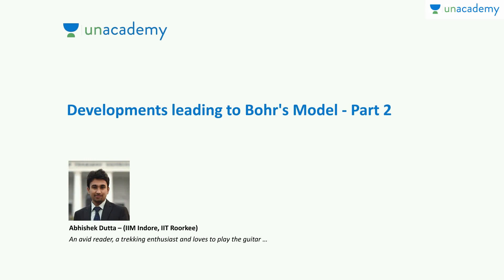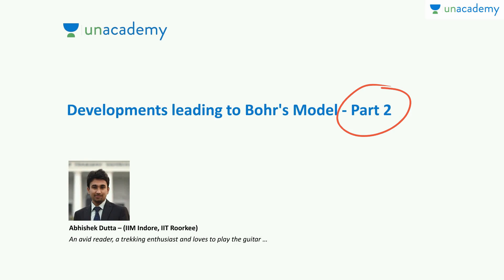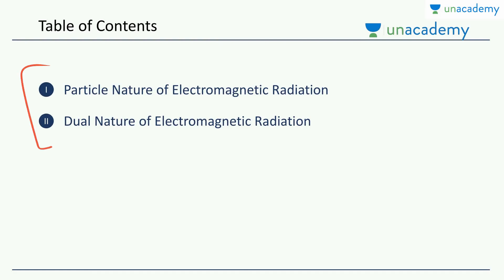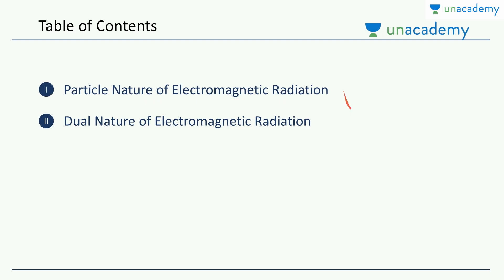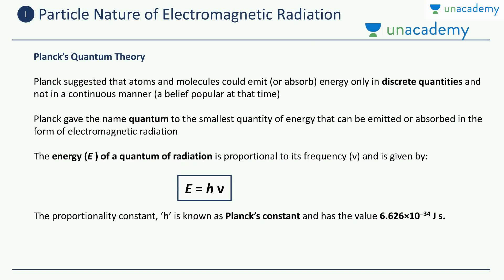Welcome to an academy once again. This video is about the developments leading to the Bohr model. We had discussed part 1 in the previous section, and in this video we will start off with part 2. We will be taking up two topics for discussion today. In the previous video we already discussed the wave nature of electromagnetic radiation. So in this section we will discuss firstly the particle nature of electromagnetic radiation, and when we know both the particle and the wave nature, we will study the dual nature of electromagnetic radiation.